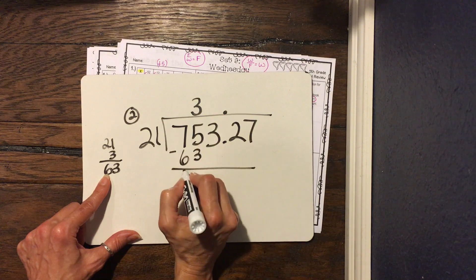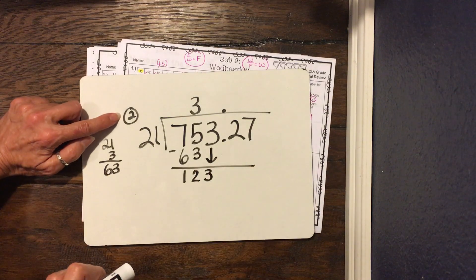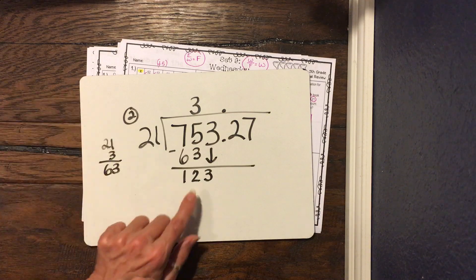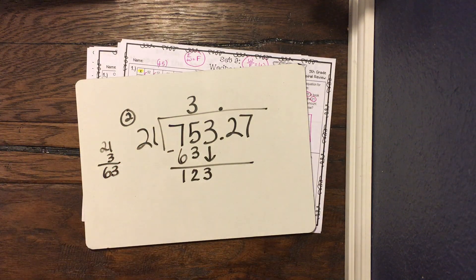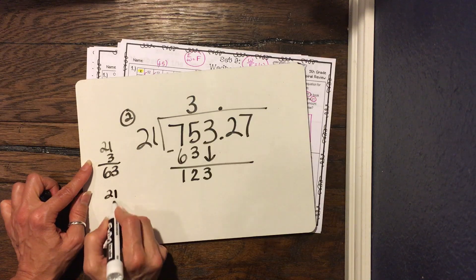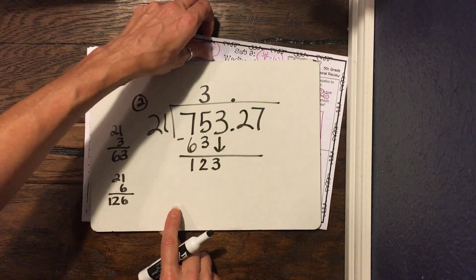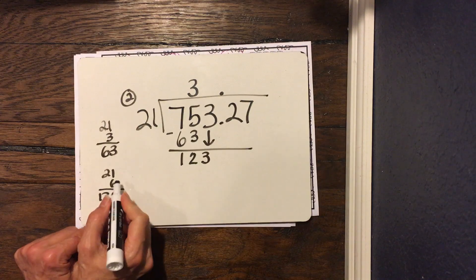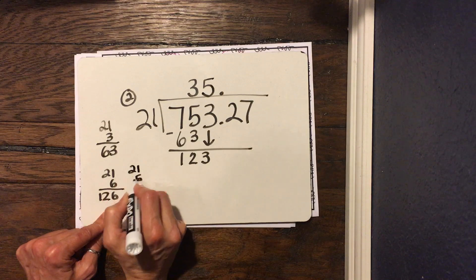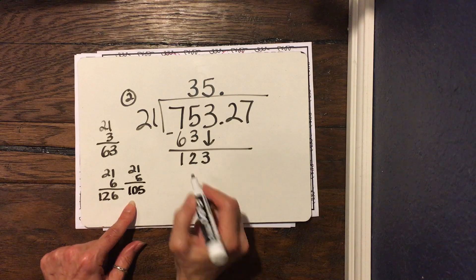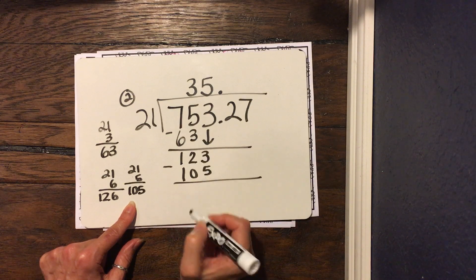We subtract: 7 minus 6 is 1, our friend doesn't need help, so we write 1. Then 5 minus 3 is 2. We bring down the 3, making 123. Back to our helper: how many times does 2 go into 12? Six times. But testing 6: 6 times 21 gives us 126 — too much. So we try 5 instead. 5 times 1 is 5, 5 times 2 is 10, giving us 105.